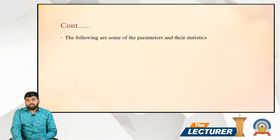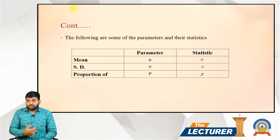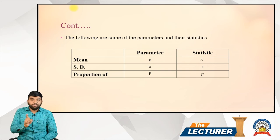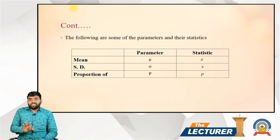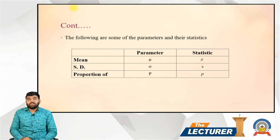The following are the parameters and their corresponding statistics: for mean, the parameter is μ and the statistic is x̄; for standard deviation, the parameter is denoted by the population symbol and the statistic is s; for proportion, the parameter is capital P and the statistic is small p. That is it for today's lecture — thank you very much.